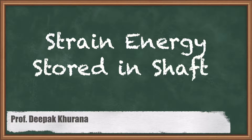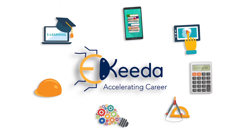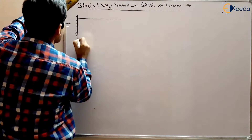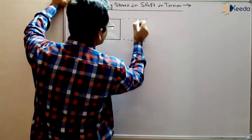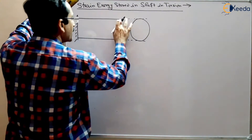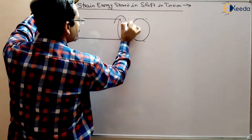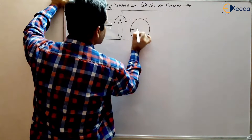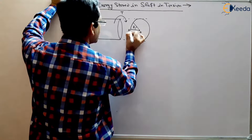Hello students. In this session we are going to study strain energy stored in a circular shaft. Suppose we have a shaft with a circular cross-section, and we have applied a torque on this shaft. A torque is applied due to which there is some angle of twist in the shaft.